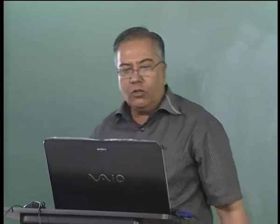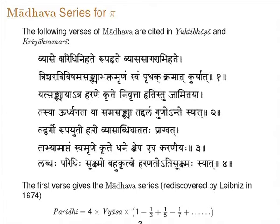The first result is the Madhava series for Pi. The following verses of Madhava are cited both in Yuktibhasa and Kriya Kramakari: 'Vyase Varidhinihate Rupahrite Vyasa Sagarabhihate Tri-Sharadi Vishama Sankhya Bhaktam Rinam Swam Prithak Kramat Kuriyat.' This verse gives the relation that the circumference is 4 times the diameter multiplied by 1 minus 1 by 3 plus 1 by 5, where Tri-Sharadi Vishama Sankhya means the odd numbers divided, Rinam Swam meaning both negative and positive. That is the infinite series for pi by 4, later rediscovered by Leibniz in 1674.